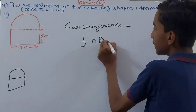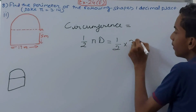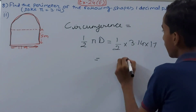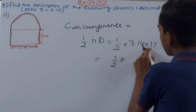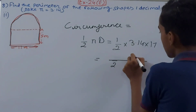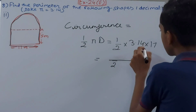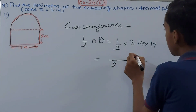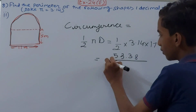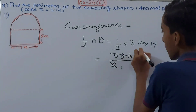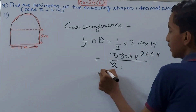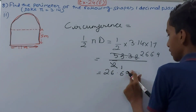Circumference of the semicircle = 1/2 × π × diameter = 1/2 × 3.14 × 17. Calculating: 3.14 × 17 = 53.38, then 53.38 ÷ 2 = 26.69 meters.